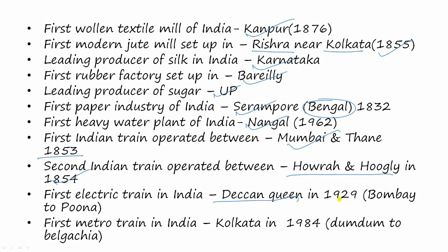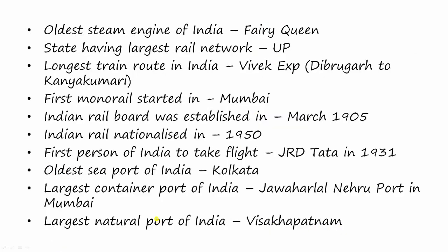The Deccan Queen ran between Bombay and Pune in 1929. The first metro train in India was established in Kolkata in 1984, and it ran between Dum Dum and Belgachia. The oldest steam engine of India is the Fairy Queen. The state having the largest rail network is Uttar Pradesh.